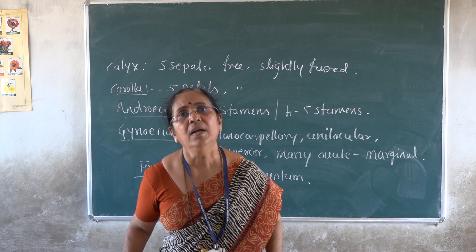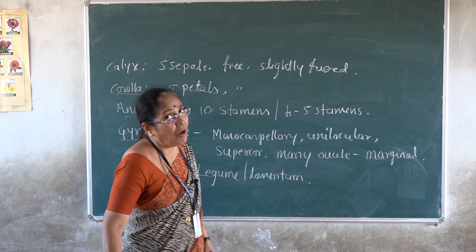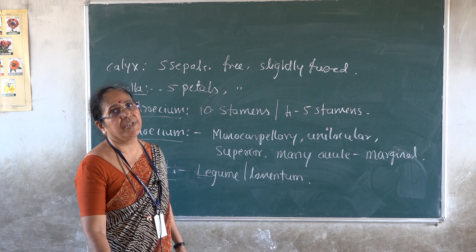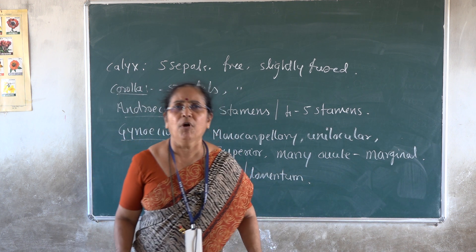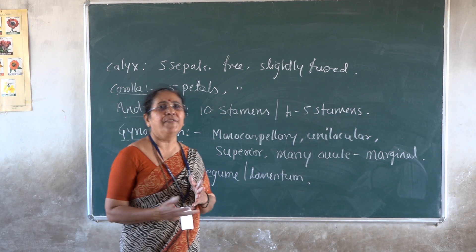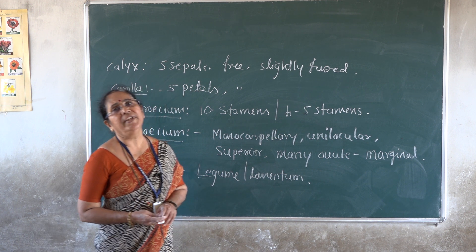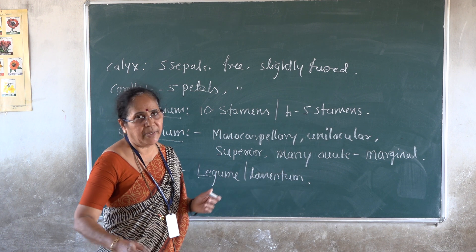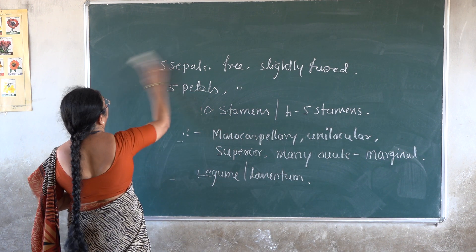These are the general features of family Fabaceae — a large family containing about 600 genera and 12,000 to 13,000 species. Because there is a lot of variation in the corolla, aestivation, and nature of plants, Fabaceae is further classified into three sub-families for convenience.